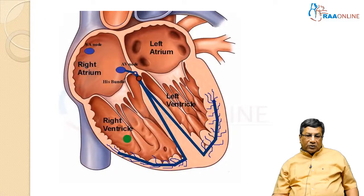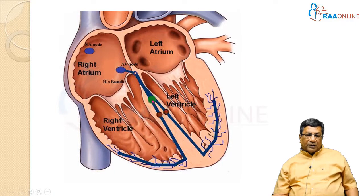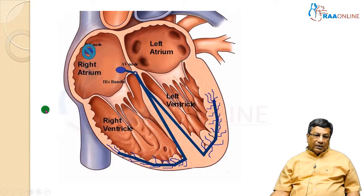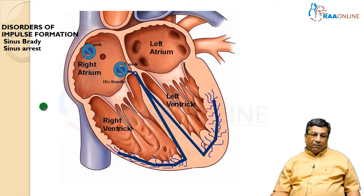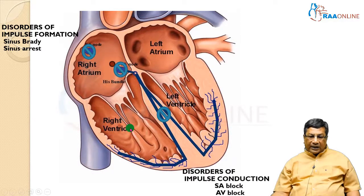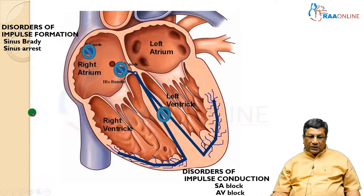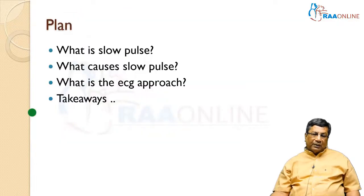Now we come to what is causing the slow pulse. The sinus node produces impulses through internodal pathways through the atrium, AV nodal delay, then AV conduction downward. Bradycardia can happen because of a disorder of impulse formation — the sinus node itself forms fewer impulses, which is sinus bradycardia — or it may be a problem in impulse conduction, where the impulse is blocked at the AV node or at the distal conduction system. A classical example is atrioventricular block.